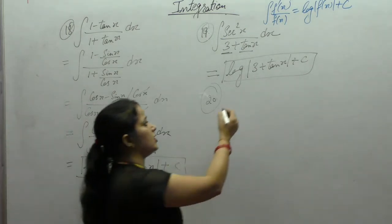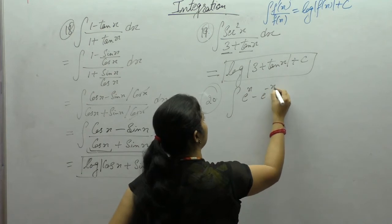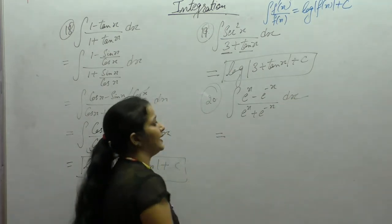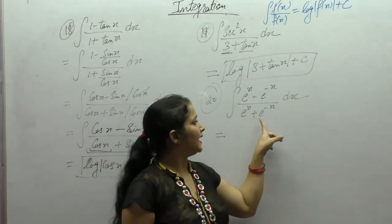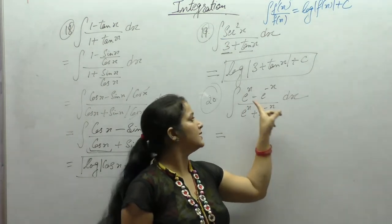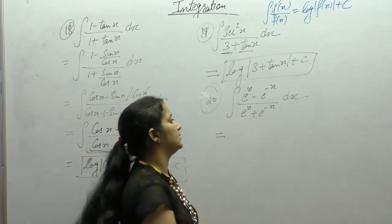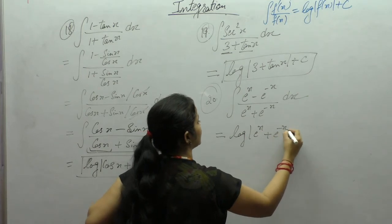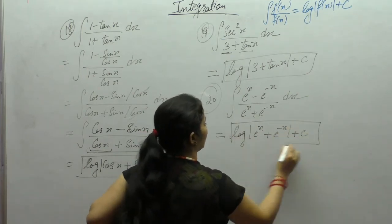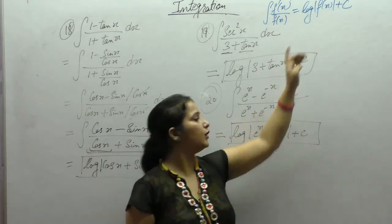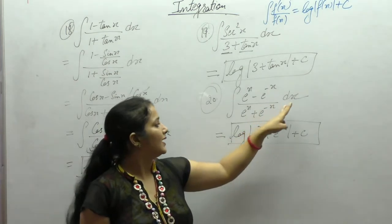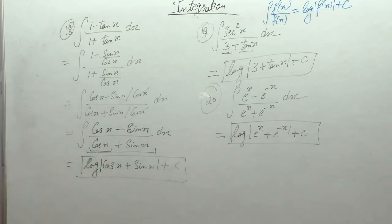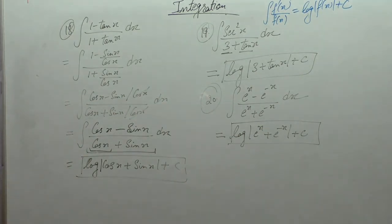Next is integration of (eˣ - e⁻ˣ)/(eˣ + e⁻ˣ). Derivative of eˣ is eˣ and derivative of e⁻ˣ is -e⁻ˣ, so the numerator is the derivative of the denominator. We directly apply the formula to get log|eˣ + e⁻ˣ| + C. Alternatively, put the denominator as t, getting ∫(1/t) dt = log t = log|eˣ + e⁻ˣ| + C.